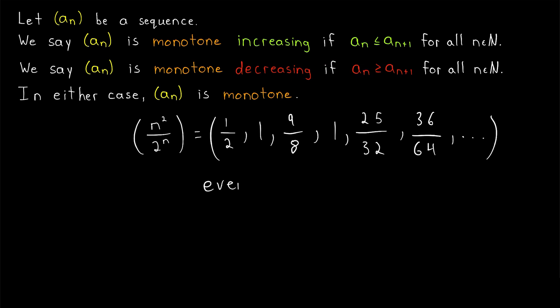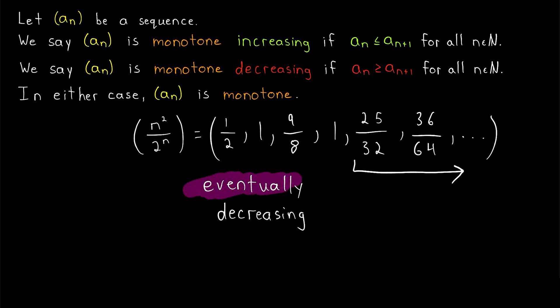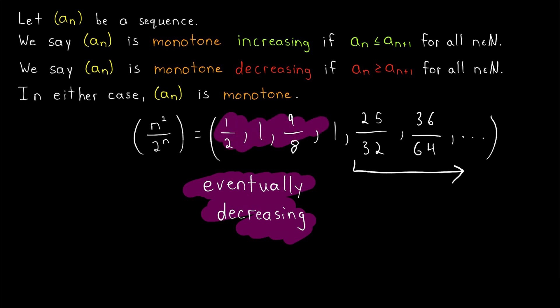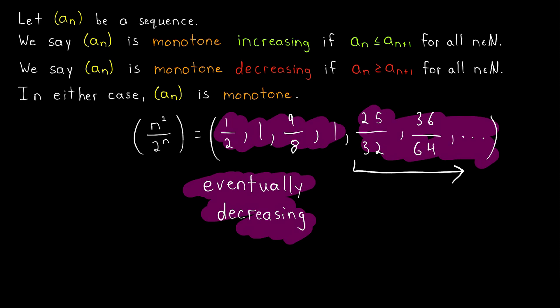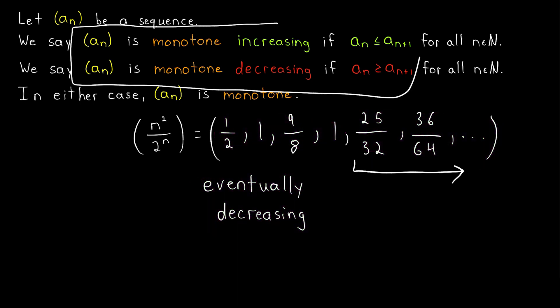This is a sequence we would say is eventually decreasing. Although it behaves a little weirdly at the beginning, from a certain point onwards the sequence will just get smaller and smaller. We say it is eventually decreasing because after a finite number of terms, the sequence behaves like a decreasing sequence. You could state a similar definition for eventually increasing sequences. In general, we say a sequence eventually has property X if it has property X after a finite number of terms.